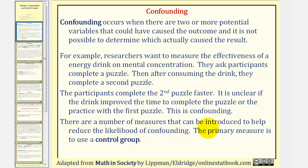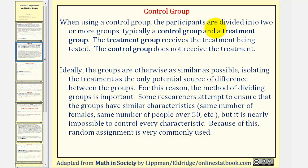There are a number of measures that can be introduced to help reduce the likelihood of confounding. The primary measure is to use what's called a control group. When using a control group, the participants are divided into two or more groups, typically a control group and a treatment group. The treatment group receives the treatment being tested, while the control group does not receive the treatment. Ideally, the groups are otherwise as similar as possible, isolating the treatment as the only potential source of difference between the groups. For this reason, the method of dividing the groups is important. Some researchers attempt to ensure that the groups have similar characteristics, but it is nearly impossible to control every characteristic. Because of this, random assignment is very commonly used.